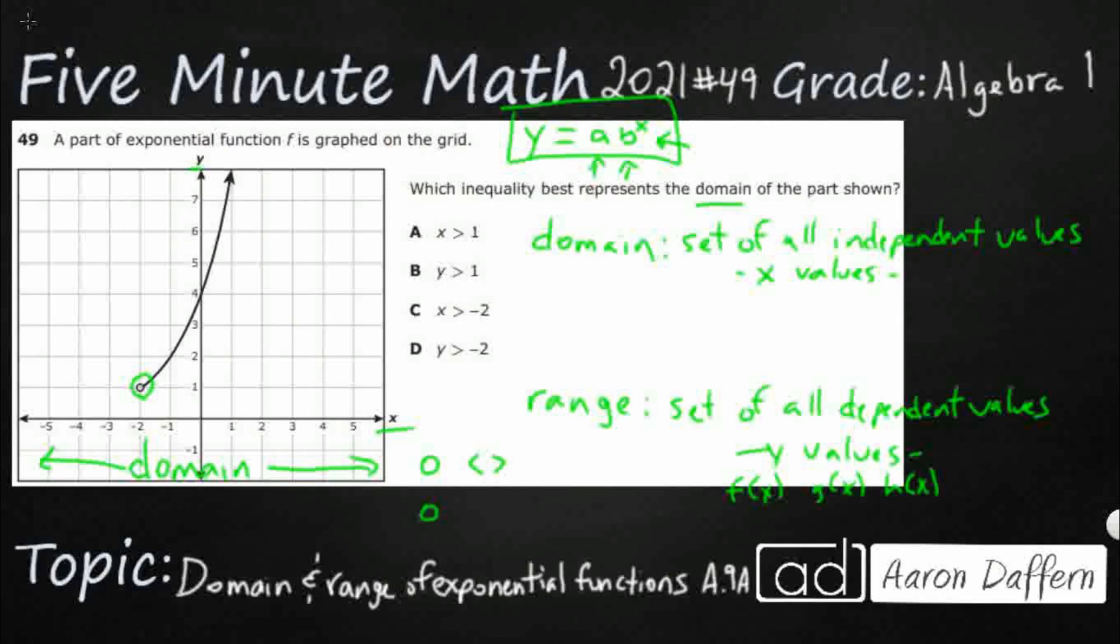If it were a closed circle, that means we could actually include it. And we would just say less than or equal to, greater than or equal to. So that's why all of your inequalities there are going to be simply greater than instead of greater than or equal to.